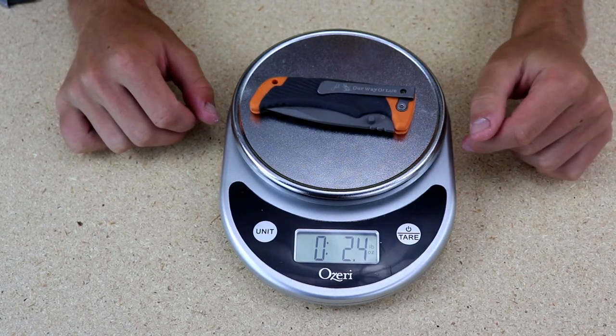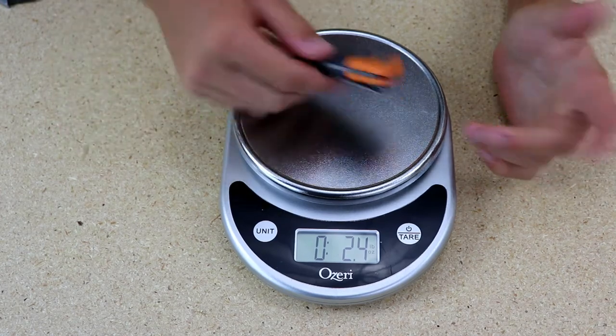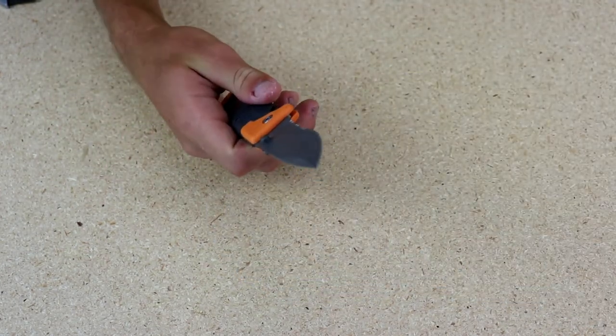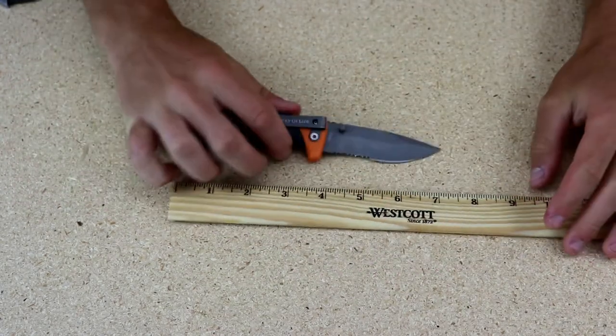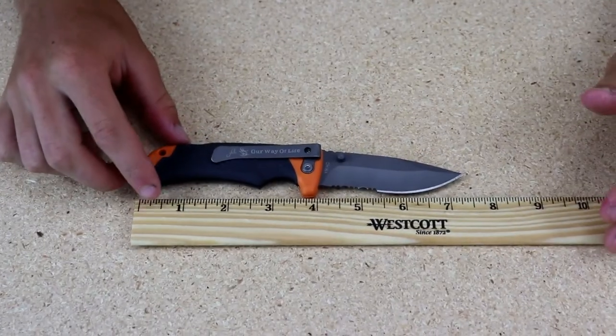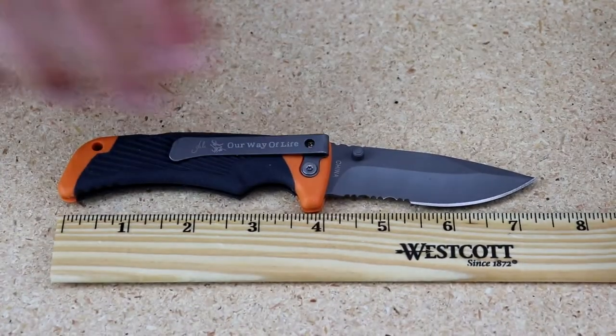2.4 ounces, and this is no small knife. It's a pretty decently sized pocket knife. Just to show you guys, I'm gonna get the ruler out. This thing is a seven inch pocket knife. I mean, to be 2.4 ounces, that is actually really really good.